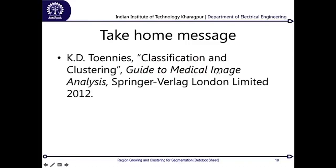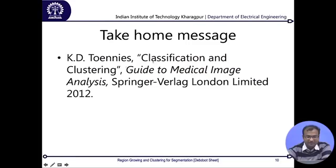In summary, today we consolidated preliminary methods for image segmentation: starting from semi-supervised region growing where a user provides seed inputs, moving to completely unsupervised clustering requiring no user input or prior image information, and then applying clustering to classify images as well. A suggested reading is the chapter on classification and clustering from the Guide to Medical Image Analysis. Thank you.